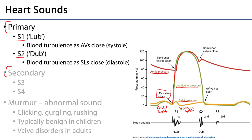As the valves close, ventricular pressure rises quickly. That pushes blood out through the semilunar valves — aortic and pulmonic — into the aorta and the pulmonary trunk. As pressure increases and then reaches a maximum and starts to decrease again, the blood in the pulmonary trunk and aorta can begin to move backwards towards the heart. When that happens, the blood is caught by the cusps of the semilunar valves, causing those semilunar valve cusps to close, and there's turbulence there.